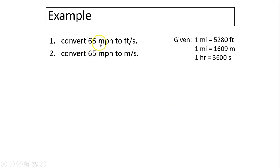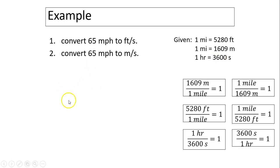Two examples. Convert 65 miles per hour to feet per second. Given factors: one mile equals 5280 feet and one hour equals 3600 seconds. So again, this conversion means those six equivalent ones.